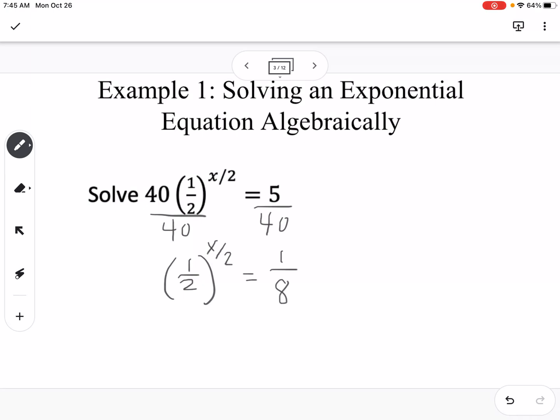Now I'm going to rewrite one-eighth as one-half to a power. One-eighth is just one-half to the third power. So I can write this as one-half to the x over 2 equals one-half to the third power because one-cubed is 1, two-cubed is 8, so that would be one-eighth.